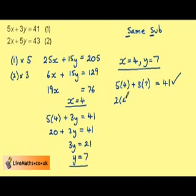And 2 lots of 4 plus 5 lots of 7 is 8 plus 35, which is 43.